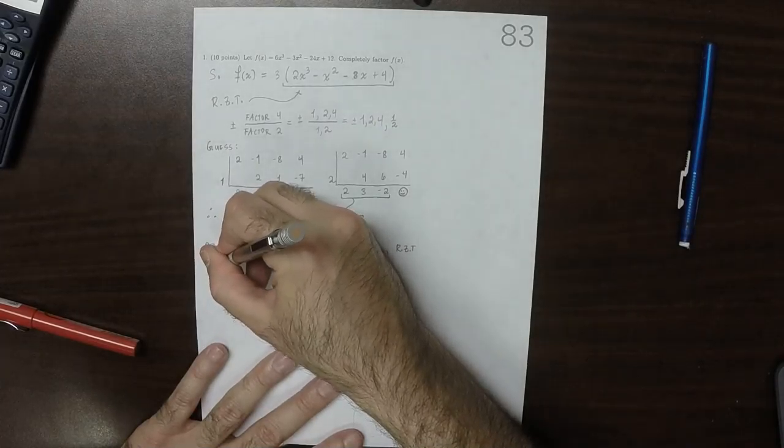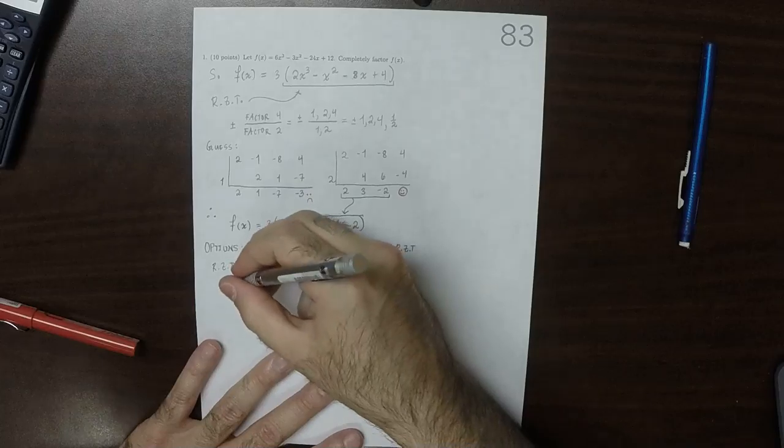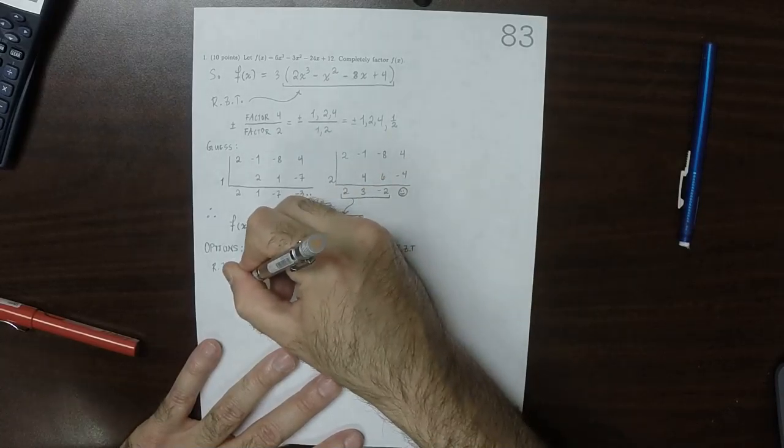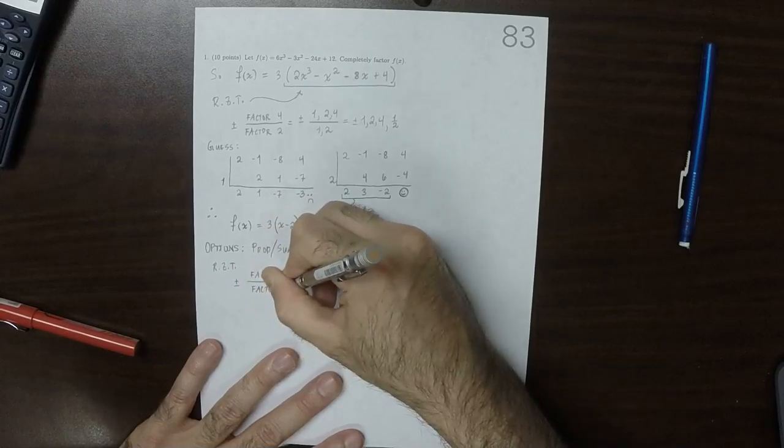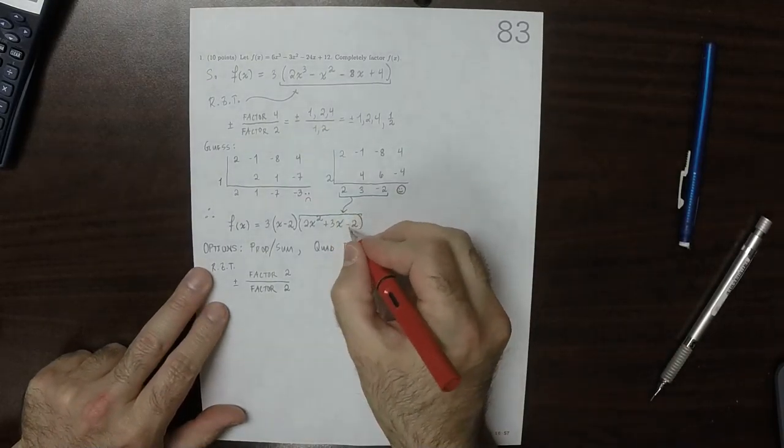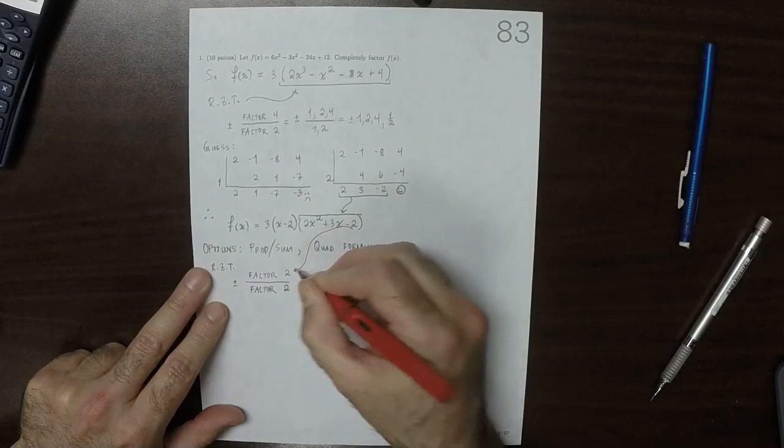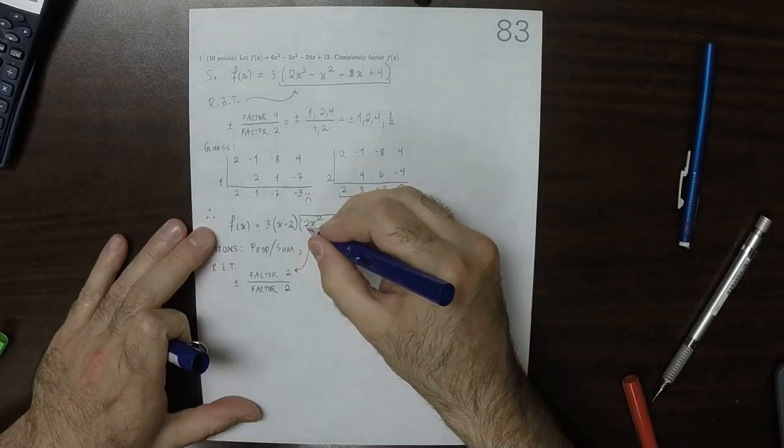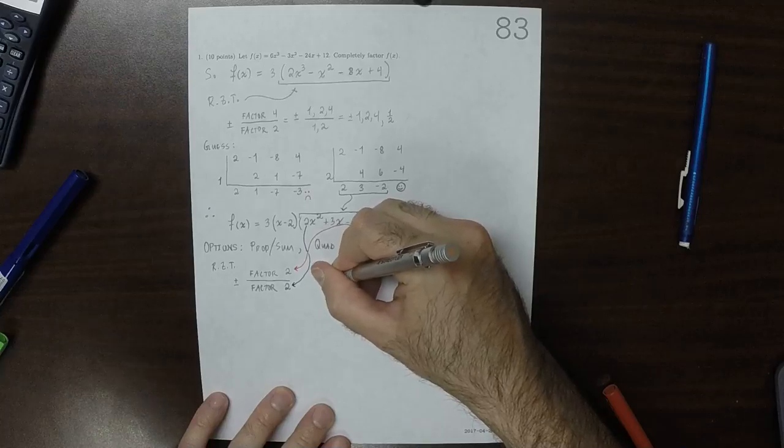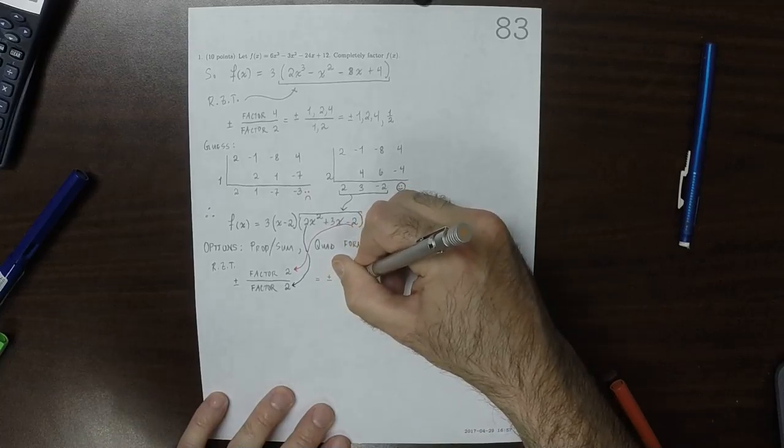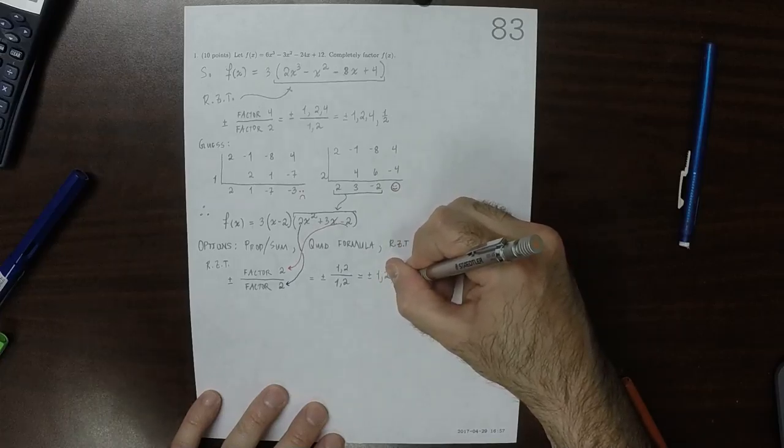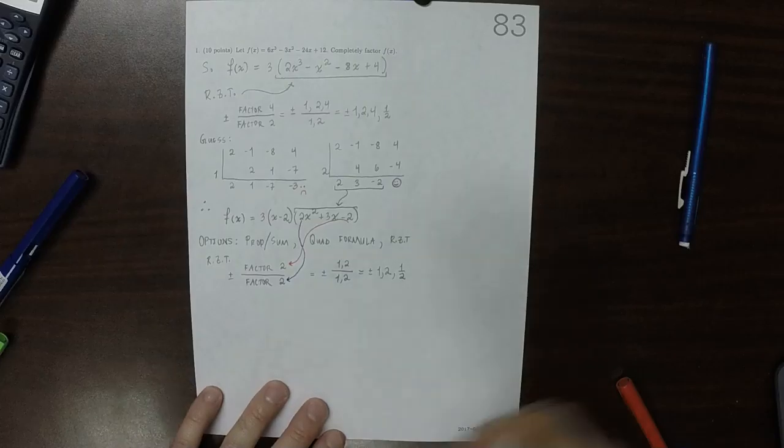So the rational zeros theorem now says, because that's what we're trying to factor, we want plus or minus a factor of 2 divided by a factor of 2, because both the constant and leading coefficient are 2. So that one there, and this one here. So that's plus or minus 1 or 2 in the numerator over 1 or 2 in the denominator. So that's plus or minus 1 and 2 and a half. Okay. So let's start guessing.